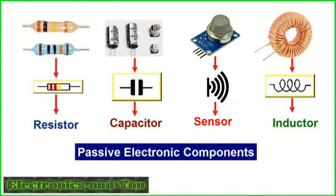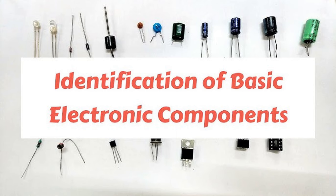Inductors store energy in a magnetic field when an electric current flows through them. They are characterized by their inductance, measured in henries (H). Inductors can be in the form of coils or solenoids, and their properties depend on factors like the number of turns, core material, and coil geometry.